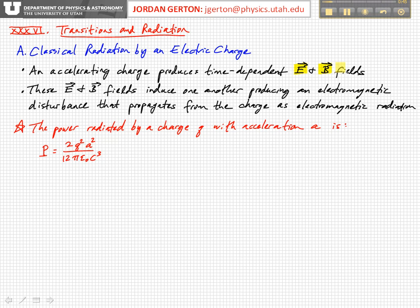These fields sort of self-induce, they induce each other, they induce one another, they oscillate, thereby producing an electromagnetic disturbance that propagates out from the charge as electromagnetic radiation. So this is what we know from classical physics, from classical E and M and classical mechanics.